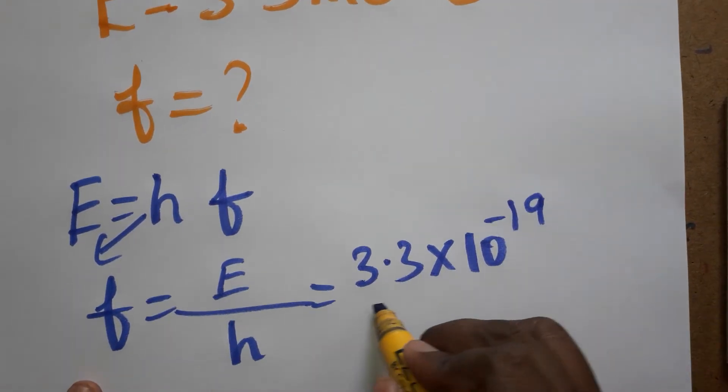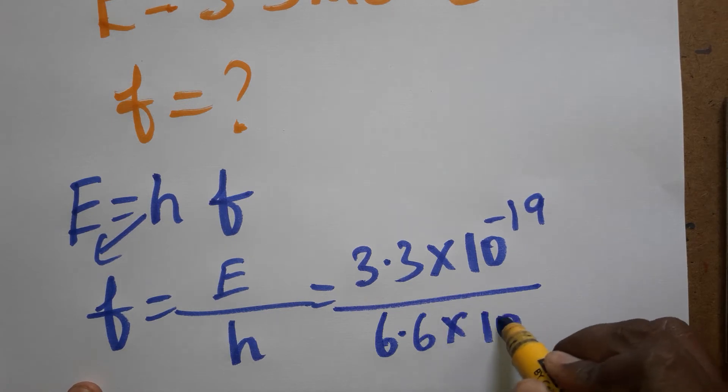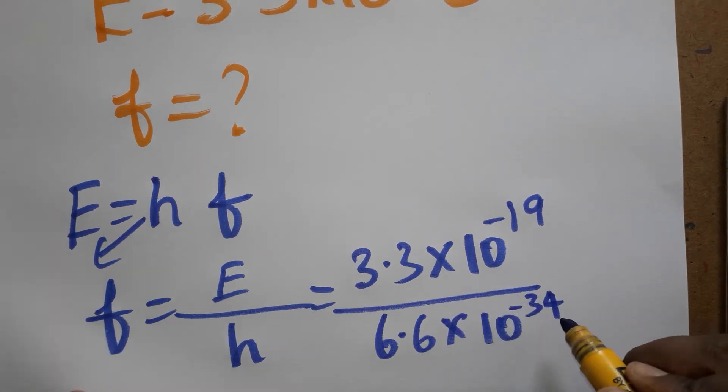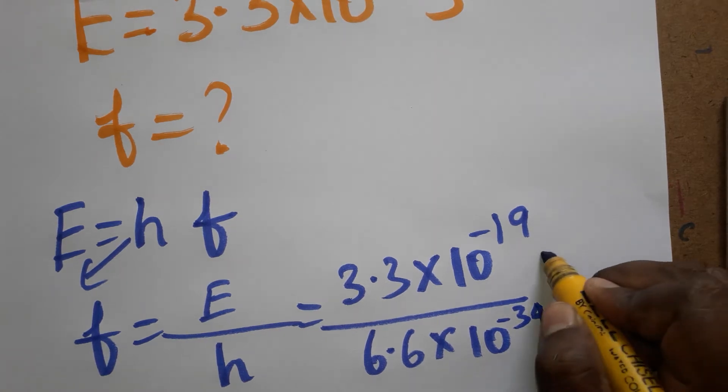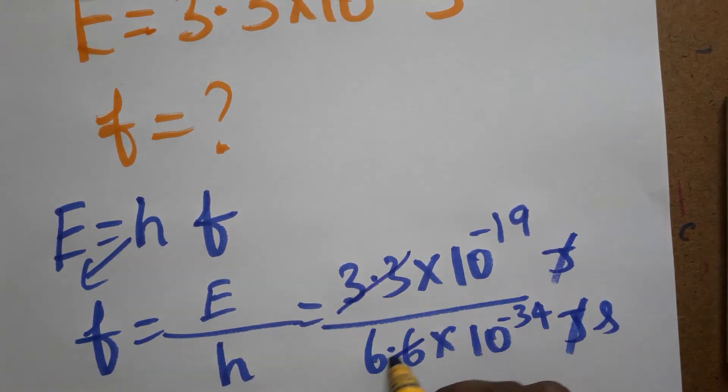Planck constant value is 6.6 × 10^-34 joule-seconds. So joule-seconds, this is joules. Joule-joule get cancelled. It is two times.